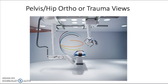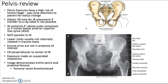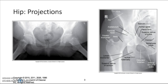Today we're going to talk about the pelvis and the hip, orthopedic views, and trauma views. This is your pelvis review — the anatomy, the positioning, and general pelvis views that you have been doing for some time. Here is the frog view and also the hip anatomy on a regular X-ray.